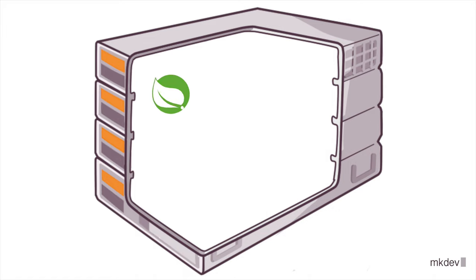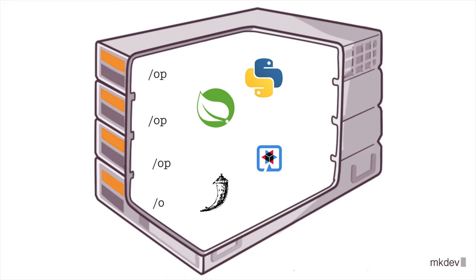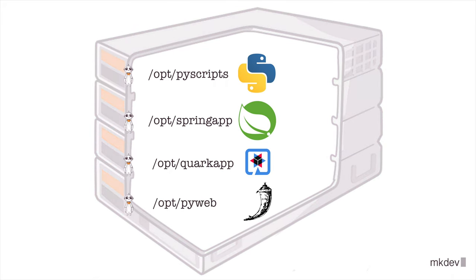There is a Java web application and there are some Python scripts to be executed periodically. You don't want to run these applications under the root user, because that would mean that each application can do anything it wants on the server, including accessing the files and directories of the other application. So, to isolate them from each other, you craft a beautiful directory layout and then run each application under a different Linux user.